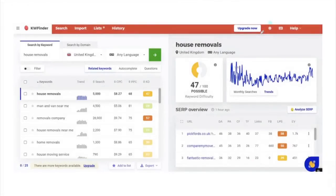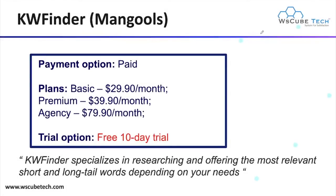The next tool is KW Finder, organized by a company called Mangools. KW Finder specializes in researching and offering the most relevant short and long-tail keywords depending on your needs. You can get a 10-day free trial. Plans are: Basic at $29 per month, Premium at $39 per month, and Agency at $79.90 per month.